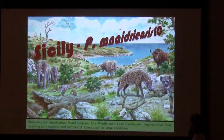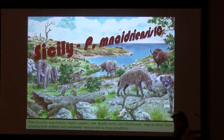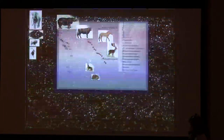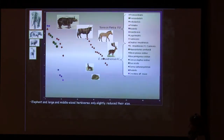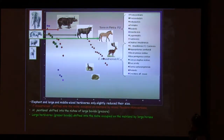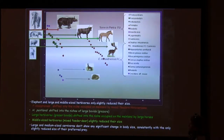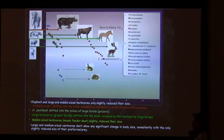Looking at the structure of the fauna from the Palaeoloxodon and madriensis fauna complex, I want to highlight that the surface area of the island was more or less the same, and also the productivity, at least according to the vegetation record. The situation is completely different: the elephant and large and medium-sized carnivores only slightly reduce in size, according to the shift in niche within the same trophic group, while large and medium-sized carnivores don't show any significant change in body size, which is consistent with the only slightly changed size of the prey.